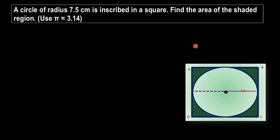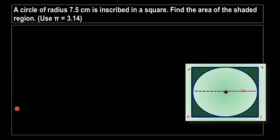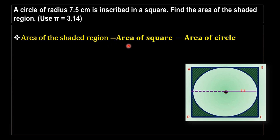To find the area of the shaded region, we have to first find the area of the square ABCD, then find the area of the circle, and subtract the area of the circle from the area of the square. That will give us the shaded region. So our formula is: area of the shaded region = area of square minus area of circle.